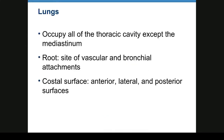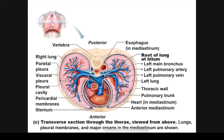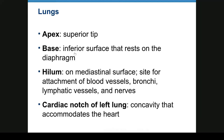The lungs occupy all of the thoracic cavity except for the mediastinal space. The root is where vascular and bronchial attachments are. The costal surfaces are the anterior, lateral, and posterior surfaces. The apex is the superior tip; the base sits on the diaphragm. The hilum on the mediastinal surface is where blood vessels, bronchi, lymphatics, and nerves enter. There is a cardiac notch for the heart. The left lung is smaller with two lobes; the right lung has three lobes.